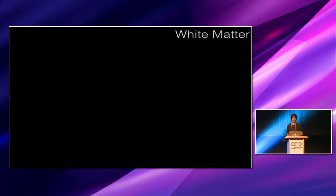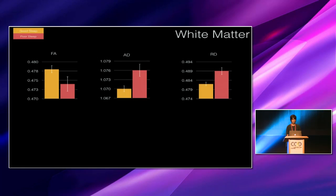However, despite there not being any differences between groups in their cognition, we did find differences in white matter measures. So these graphs display that average FA across all white matter tracts is reduced in the poor sleepers, and average axial diffusivity and radial diffusivity are increased, consistent with our hypotheses.